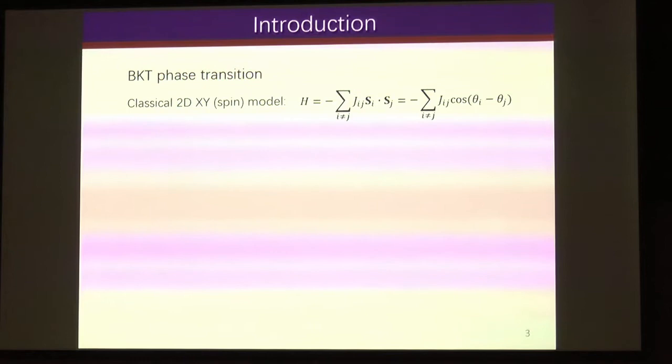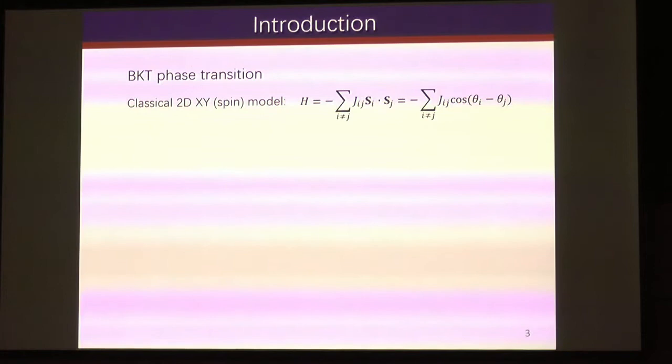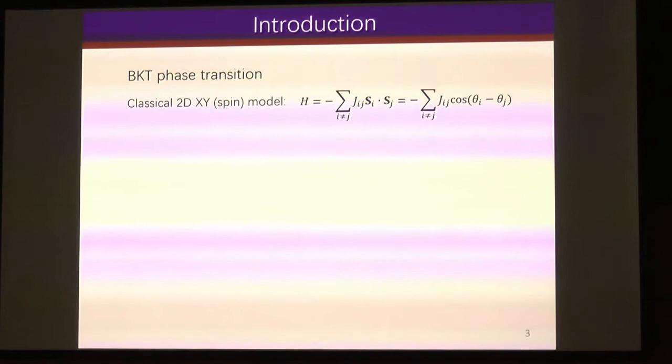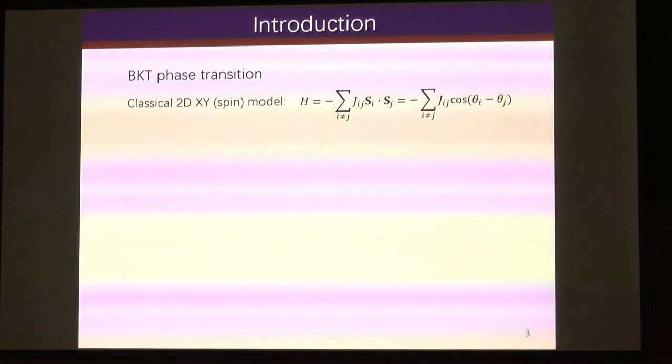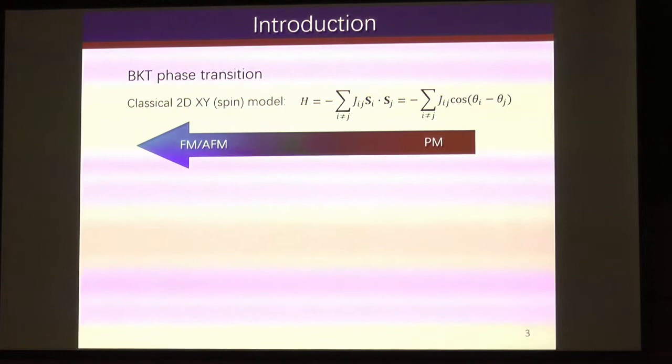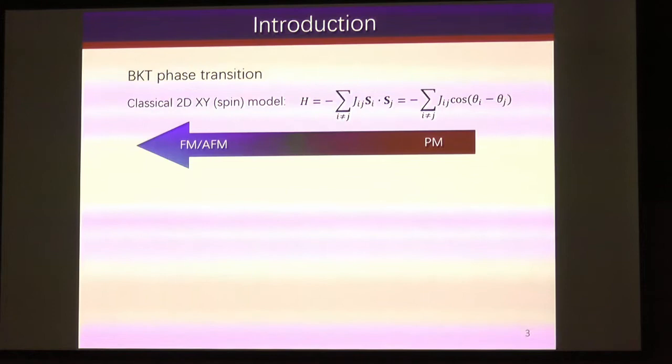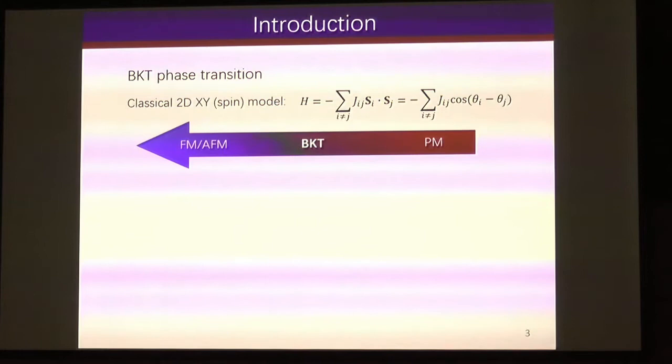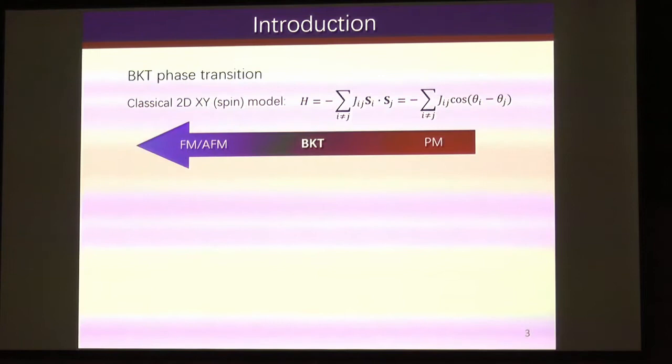The BKT phase is different from our commonly known finite order phase transition — it is infinite order. It is defined on the classical 2D XY model, which has continuous symmetry. As we can see from the simple Hamiltonian, at high temperature it has a paraelectric state, and at the lowest temperature it should be an ordered state. The model also tells us that at intermediate temperature there should be something called the BKT phase.